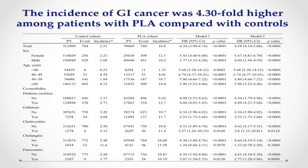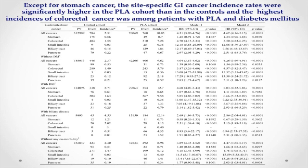In this table, we can see that except for stomach cancer, the site-specific GI cancer incidence rate was significantly higher in the pyogenic cohort than in the control. The highest incidence of colorectal cancer was among patients with pyogenic liver abscess and diabetes mellitus.